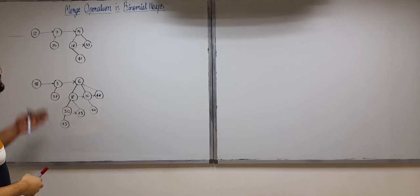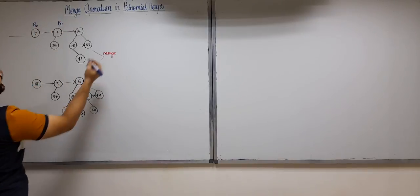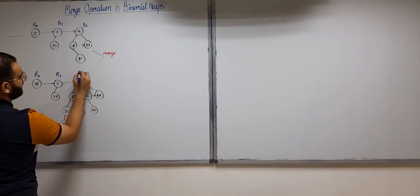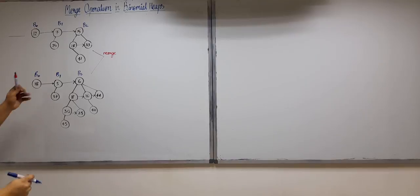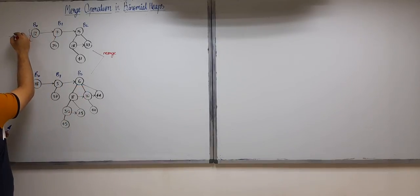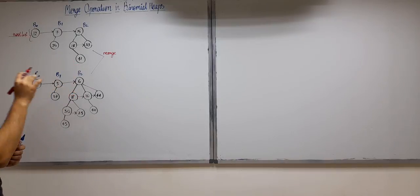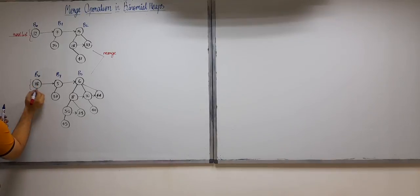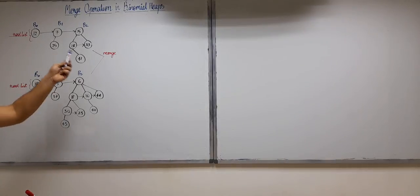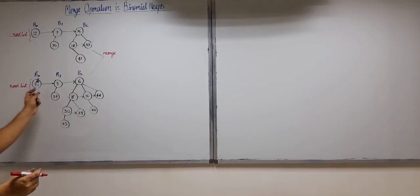Now let's move to the merge operation. We have two binomial heaps to merge: the first contains B0, B1, and B2; the second contains B0, B1, and B3. The list of all roots of all binomial trees is known as the root list. In the first heap the root list is 12, 7, 15, and in the second it is 18, 3, 6. The merge operation only operates on these root lists — we don't need to go deeper.